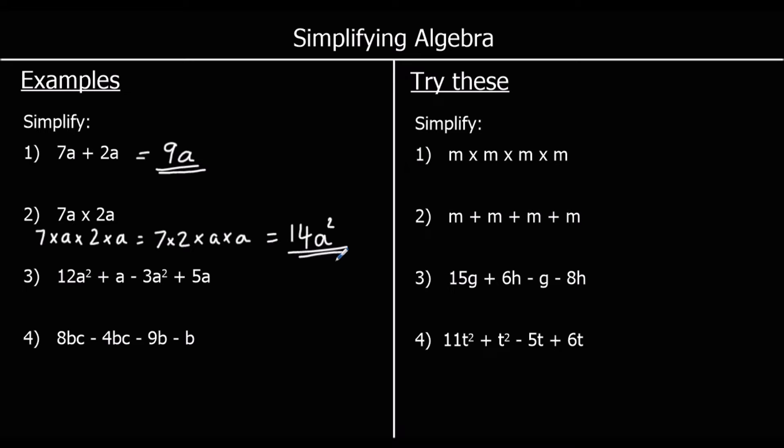For question 3, we need to know we can only add things that are the same. So here we've got a squareds, 2a squared terms, and 2a terms. a squared and a are not the same number. They're different. So we can't add them together. But we can add our a squareds and our a's. So for a squareds, we've got 12a squared minus, take away, 3a squared. We're always taking the sign from in front of a term. So this negative is attached to this 3a squared. 12a squared, take away 3a squared. 12 of something, take away 3 of something, is 9 of something. So 12a squared, take away 3a squared, is 9a squared.